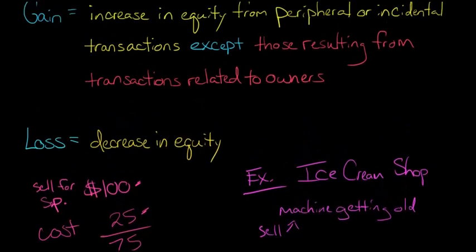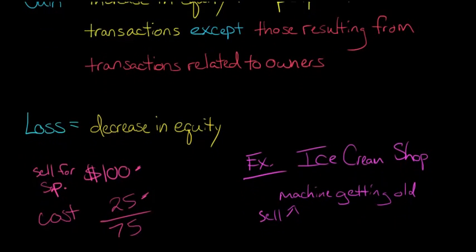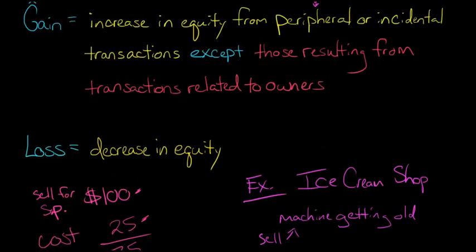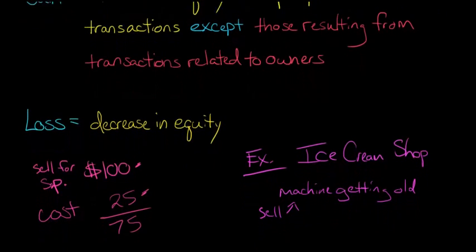And we look back at our definition. Did we have an increase in equity? Yes. The firm has $75 more. I mean, technically, we have $100, but we're kind of getting rid of that cost. That's just how we compute a gain or a loss. We basically look at our historical cost and then what we got for the asset. So now let's look at the flip side of this.